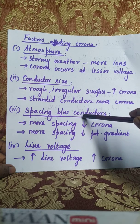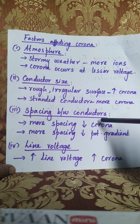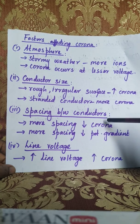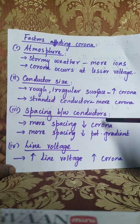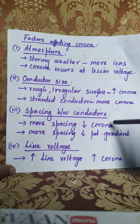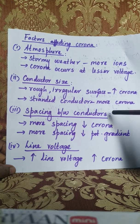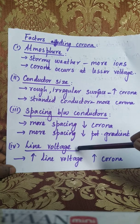The third factor is spacing between the conductors. Since potential gradient increases the chance of corona occurrence, more spacing between the conductors will reduce the potential gradient, which in turn reduces the corona occurrence. Therefore, increasing the spacing between conductors reduces the effect of corona.